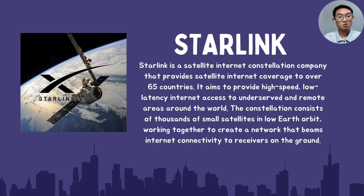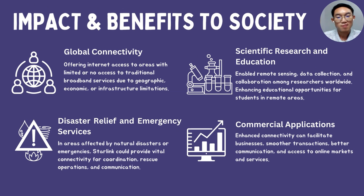The constellation consists of thousands of small satellites in low-earth orbit that work together to create a network that brings internet connectivity to receivers on the ground. The impacts and benefits of Starlink include: first, Global Connectivity — one of the primary goals is to bring internet access to areas with limited or no access to traditional broadband services due to geographic, economic, or infrastructural constraints. This can empower communities with educational resources, healthcare information, economic opportunities, and access to global markets.